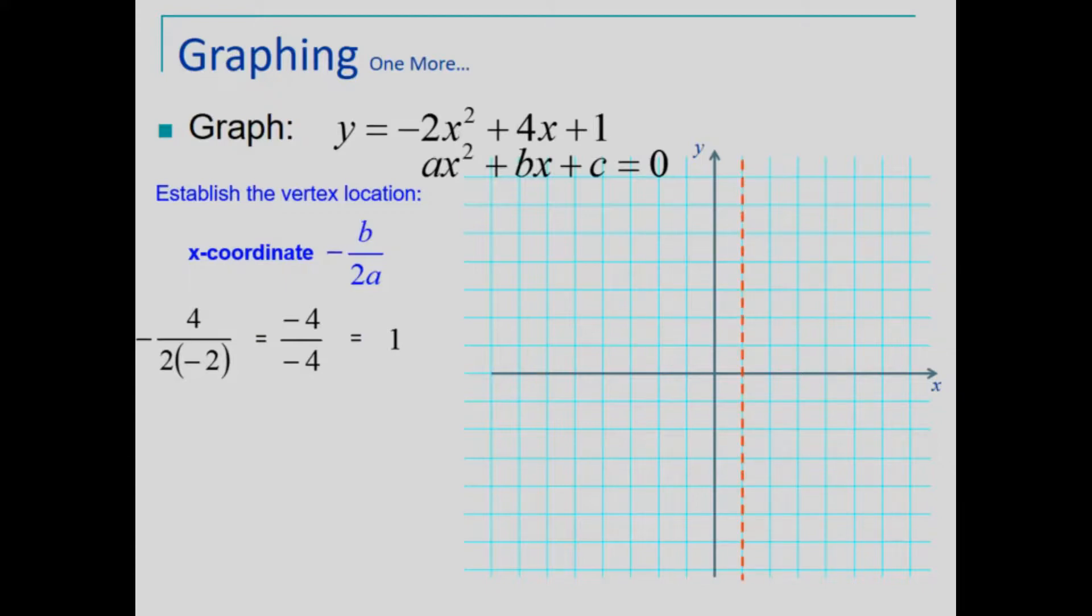This not only gives us the x-coordinate, but it also establishes the axis of symmetry: x equals 1, a vertical line.